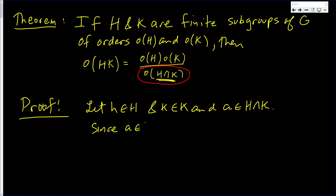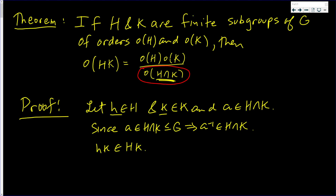Since a is in H intersect K, which is a subgroup of G, that implies that a inverse is also an element in H intersect K. Now, h times k is clearly in HK.